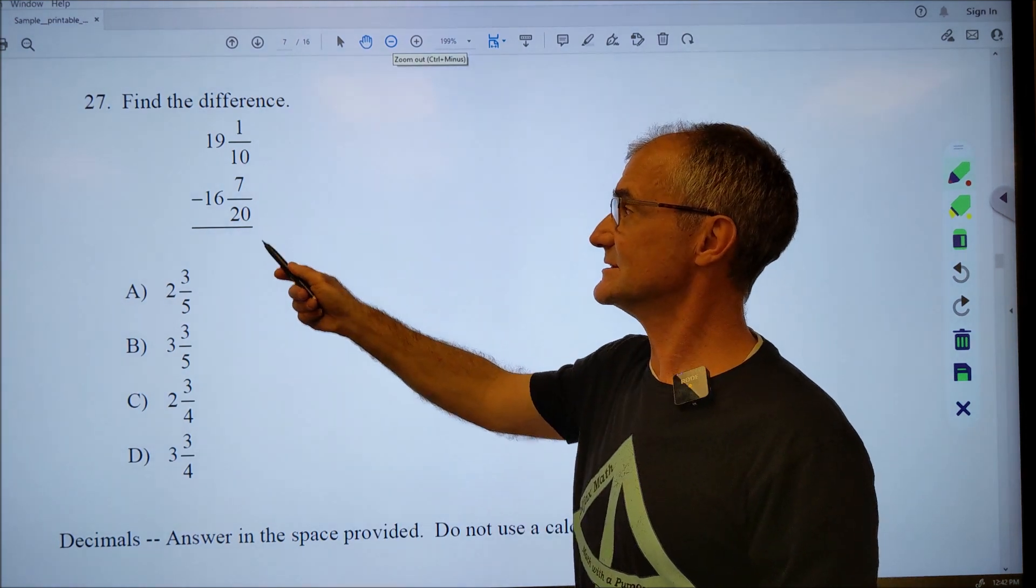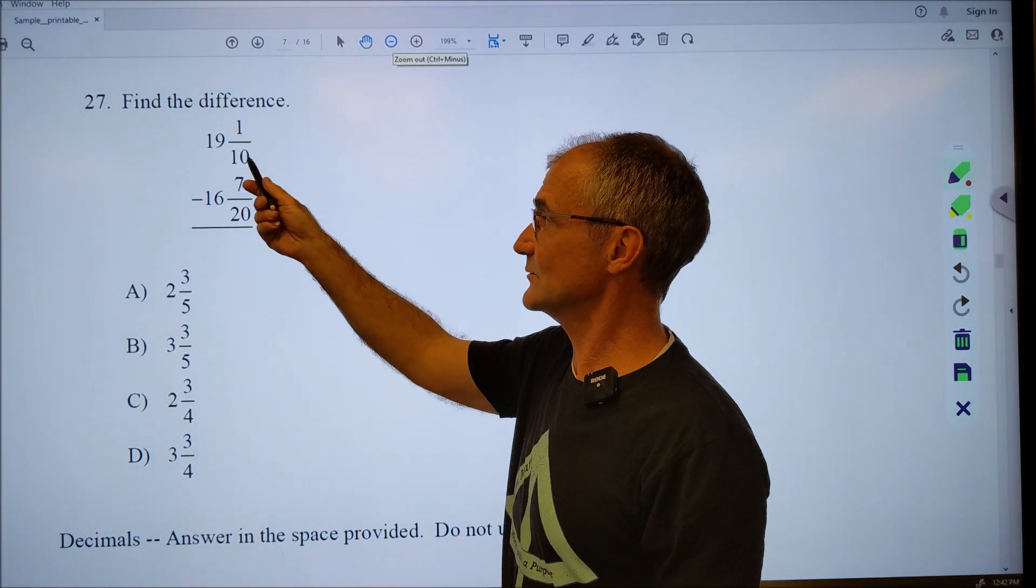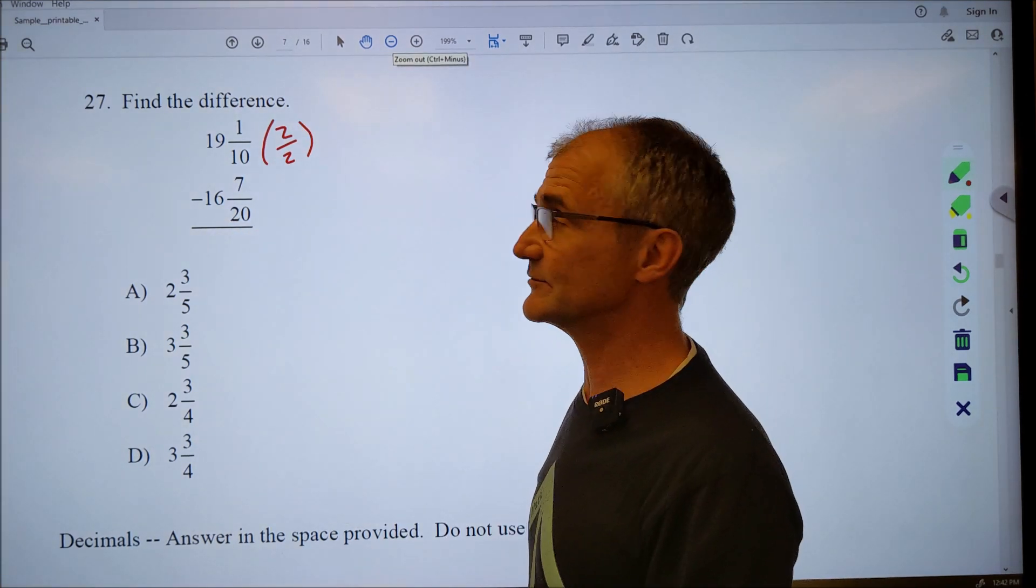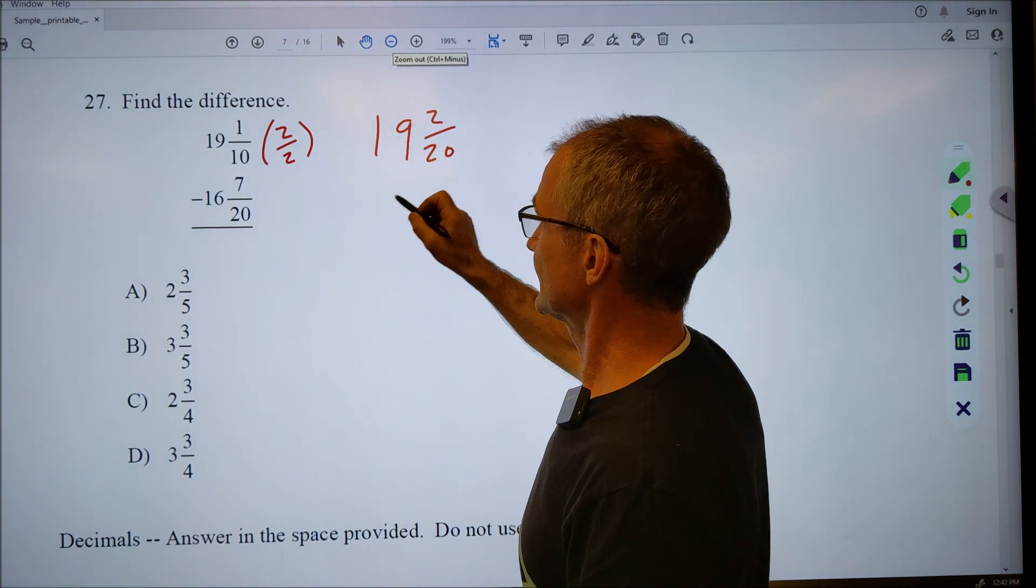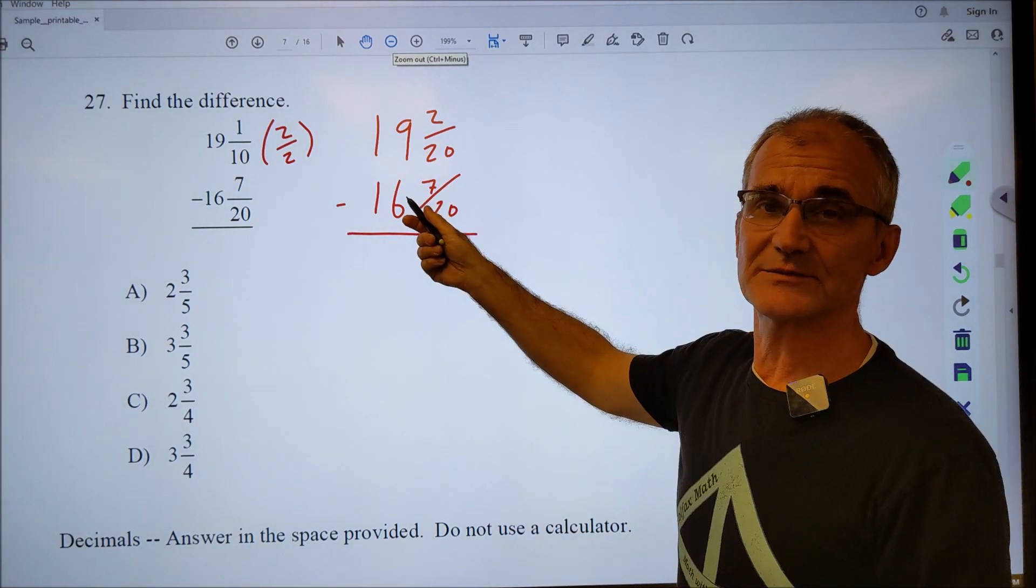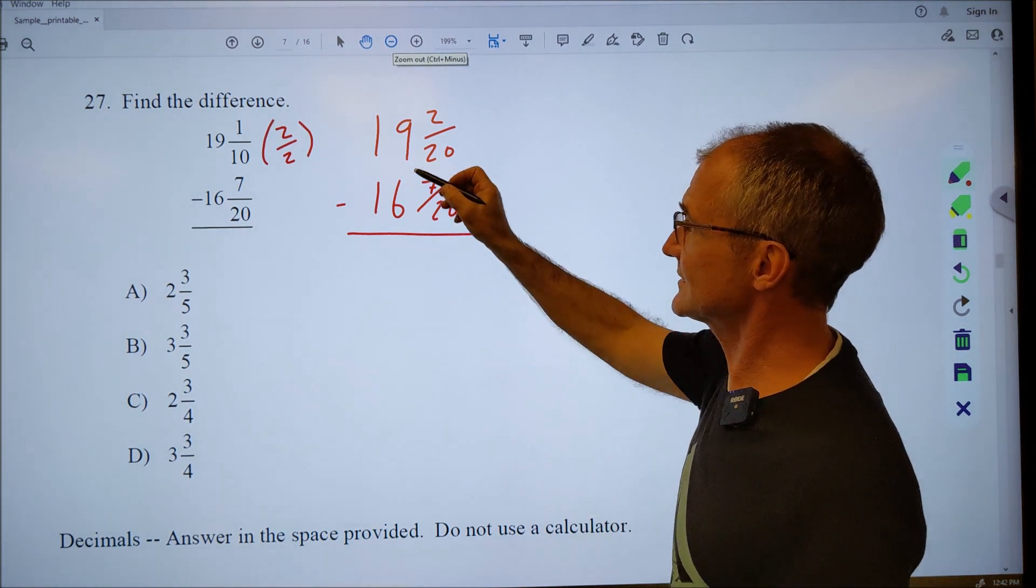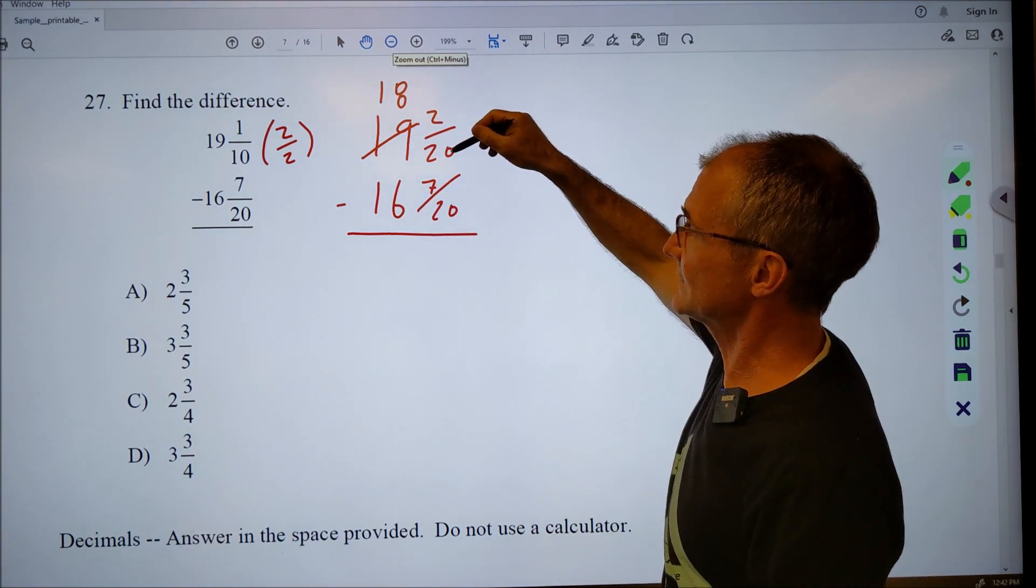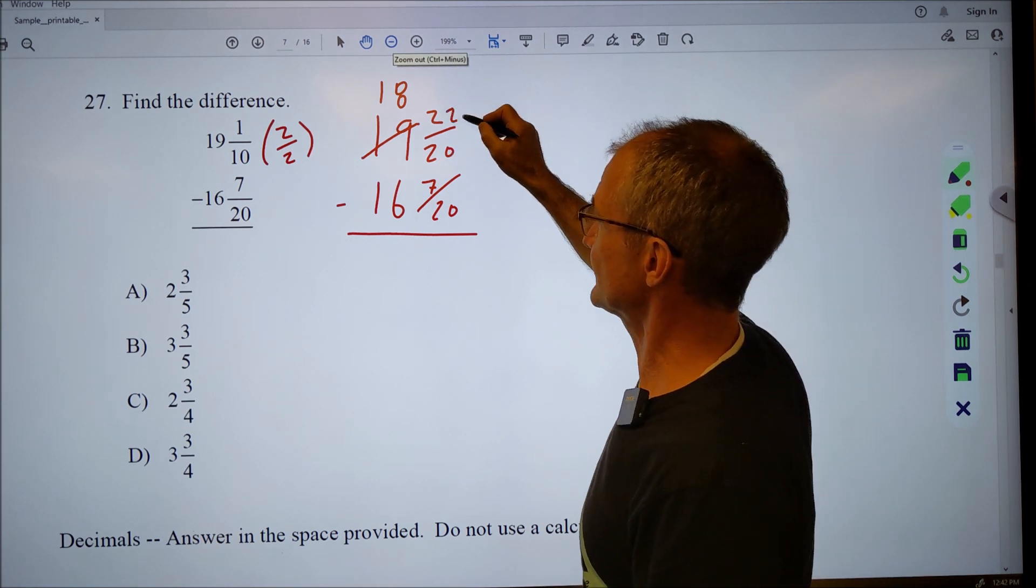Number 27, I have mixed numbers and I'm subtracting. First thing I need to do is get a common denominator. So I got seven twentieths and one tenths. I'm going to multiply this by two over two. Give me that common denominator of twenty. That's going to be 19 and two twentieths minus 16 and seven twentieths. Two minus seven is going to give me a negative number. So I don't really want a negative number when I subtract my fractions. So what I'm going to do is I'm going to borrow a full unit from here, make this an 18. A full unit in twentieths will be twenty twentieths. So I'm going to add that twenty twentieths to this. Twenty plus two is twenty two.